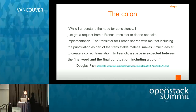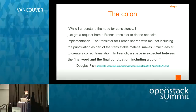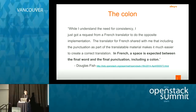But then came an email to the mailing list by Douglas Fish which said: 'While I understand the need for consistency, I just got a request from a French translator to do the opposite.' The French translator shared that having punctuation as part of the translatable material makes it much easier to create a correct translation. In French, a space is expected between the final word and the final punctuation, including a colon. So I said 'oops' — the whole part we had just prepared had to be reverted. In the end, after discussion on the mailing list, we decided to keep the colon but get rid of any spaces at the end of sentences, because we couldn't find any language where that was needed.